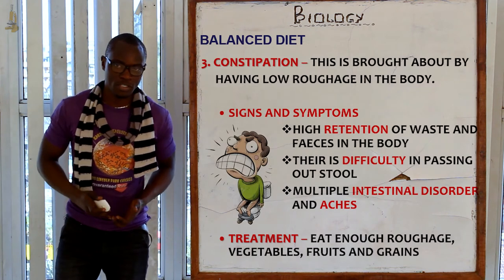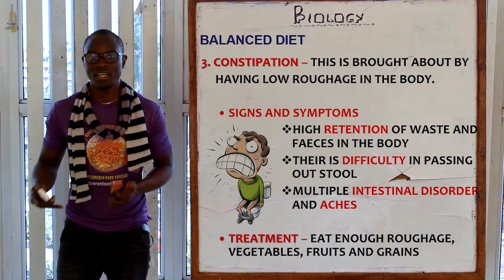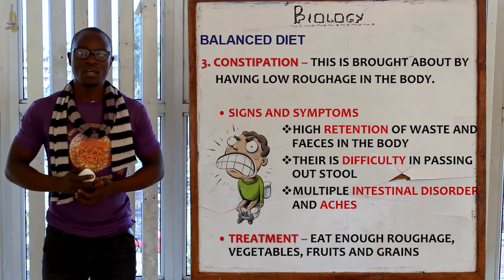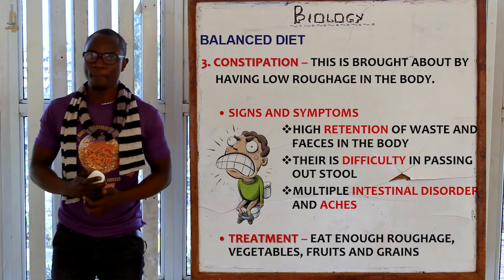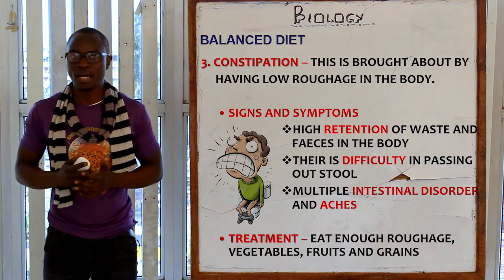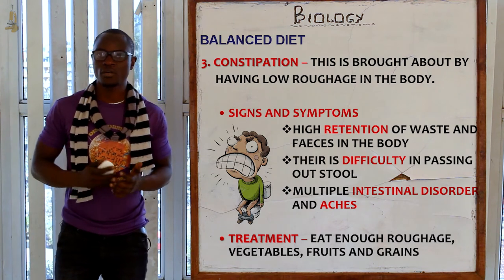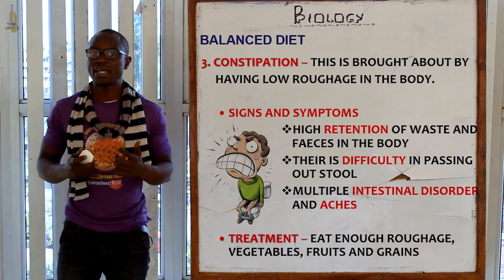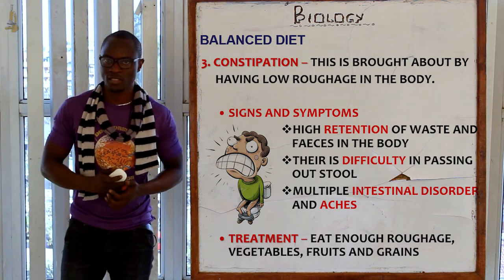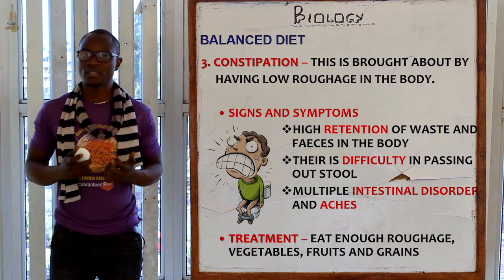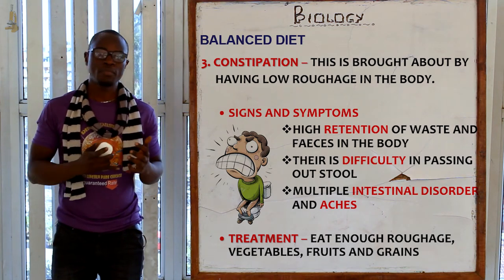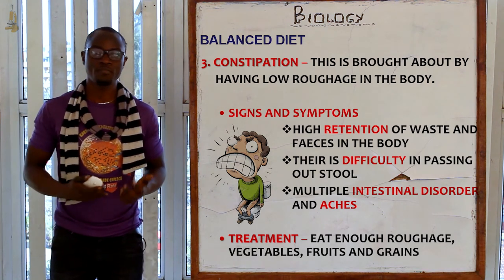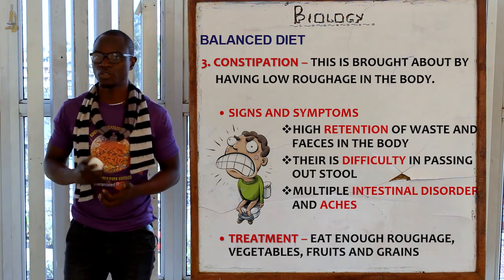Let's look at the disorder constipation. Constipation is caused by low roughage in the diet. The signs and symptoms include retention of waste and feces in the body — the person may want to relieve themselves but nothing comes out. These people may also experience stomach ache or stomach upset, which is not necessarily caused by pathogens but by a diet lacking foods rich in roughage.